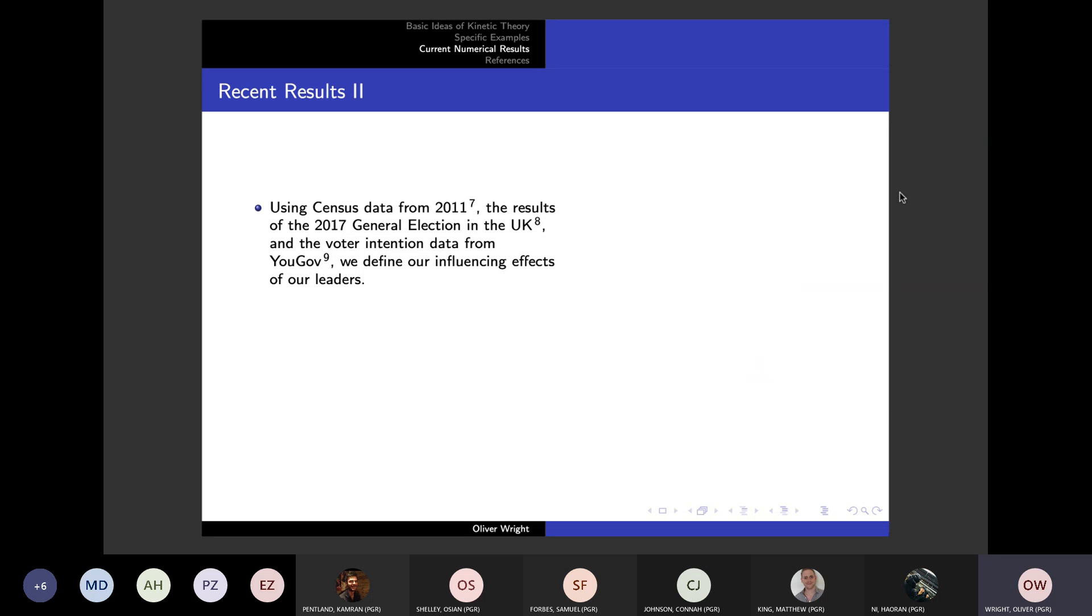The only data we really had access to was the 2011 census data, the results of the 2017 general election, and we had the vote of intention from just before the 2019 election, which we then used all those three to define the influence of our leaders over the followers within their influence area.